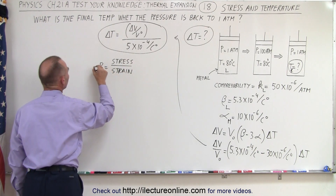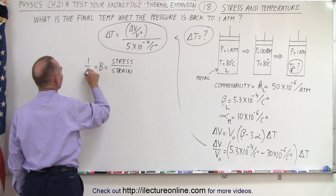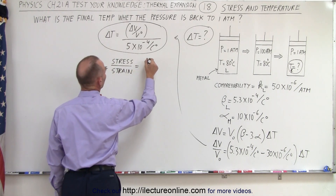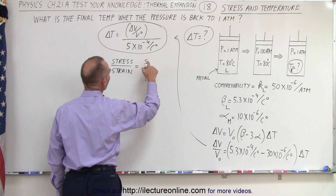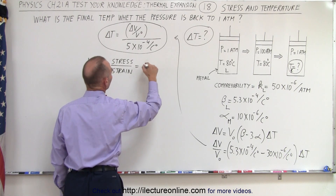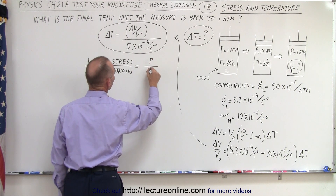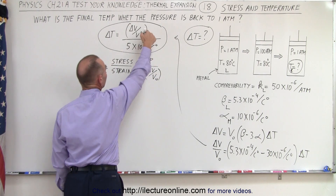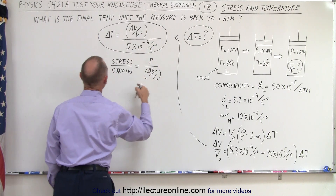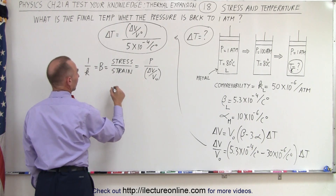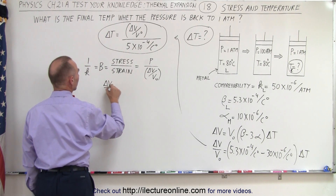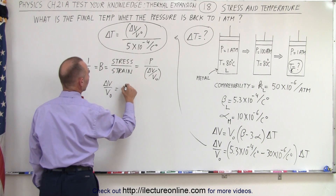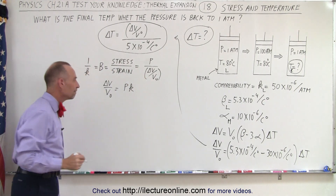We note that the bulk modulus is 1 over the compressibility. And by definition, this equals the pressure divided by the change in volume over V initial. So that is exactly what we need. We solve for that: the change in volume over initial volume is equal to pressure times the compressibility.